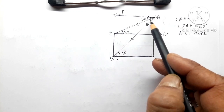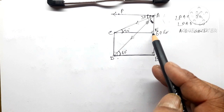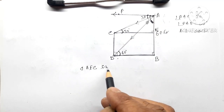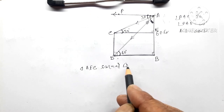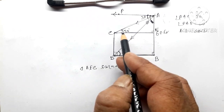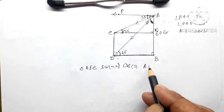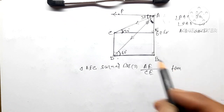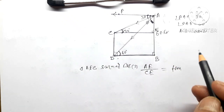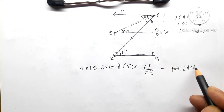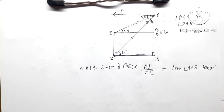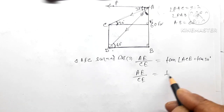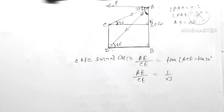So that EC, EC, e should say this, e should say this. This is AEC, this is AEC, and EC. Tan CE equals CE. AE by CE equals 1 by root 3.